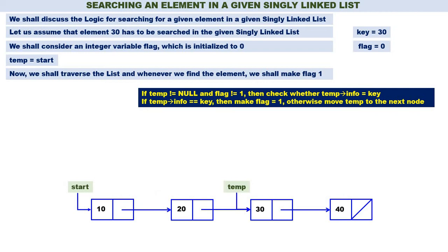Again check the condition: temp is not equal to null because temp is containing the address of node 30. Flag is not equal to 1. Check the condition: temp of info is equal to key. What is temp of info right now? 30. What is key? 30. 30 is equal to 30 — that is, temp of info is equal to key. Therefore we make flag equal to 1. Flag becomes 1. So whenever temp of info is equal to key, it means the element is found. 30 is found — this is case 1 where the element is found.